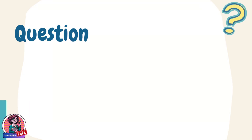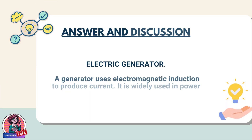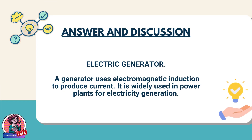Question 29. What device converts mechanical energy into electrical energy? Answer: electric generator. A generator uses electromagnetic induction to produce current. It is widely used in power plants for electricity generation.